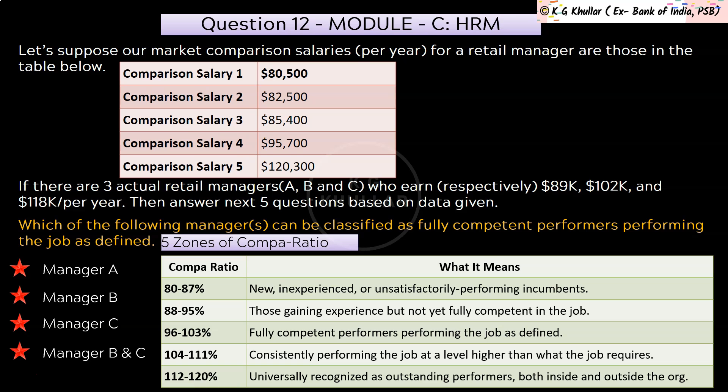With this, you can easily answer the question. Manager B with a compa ratio of 101.59% falls in the 96–103% range, making him the one who is fully competent and performing his job as defined. Thus, the correct option for the given question is option B.